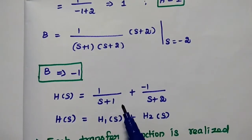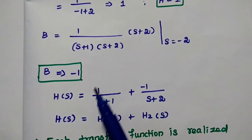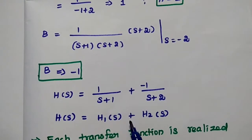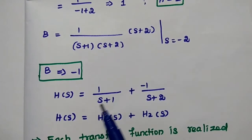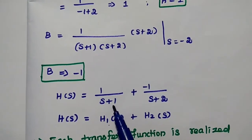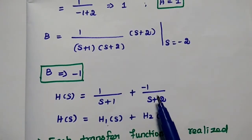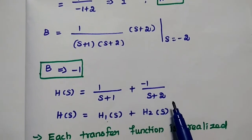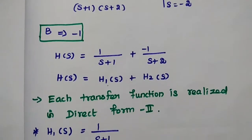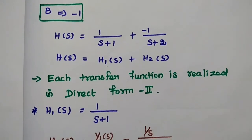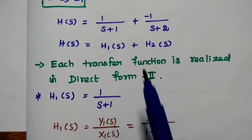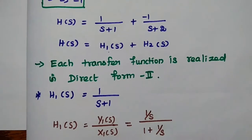We consider each partial fraction as a separate transfer function. H1(s) equals 1 divided by (s plus 1), and H2(s) equals minus 1 divided by (s plus 2). After obtaining these partial fractions, we draw the direct form 2 structure for each transfer function separately.